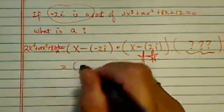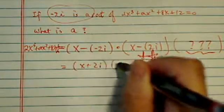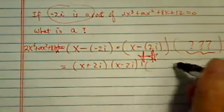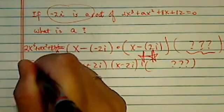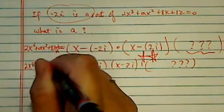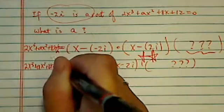Let's multiply this one out. It's (x + 2i) times (x - 2i), and we don't know what's left over. And this one, when we multiply it out, we're going to have the whole thing.